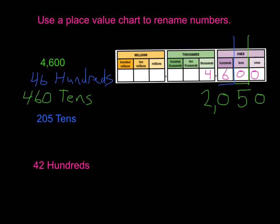Now, 205 tens is the same thing as 2,050.